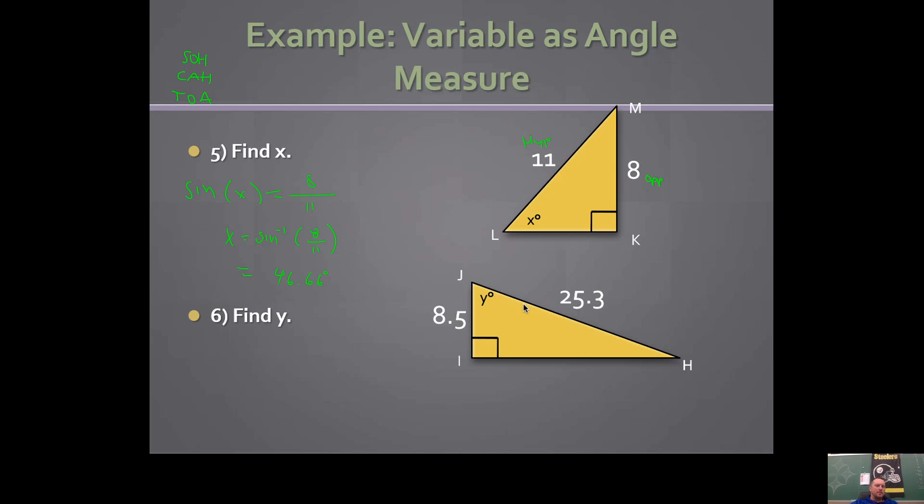Let's find the value of y. It's a right triangle. This is our adjacent leg. This is our hypotenuse. Adjacent hypotenuse means cosine. So cosine of the angle that you want is equal to 8.5 divided by 25.3.